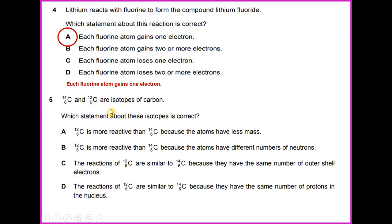These two carbons are isotopes of carbon. Which statement about this isotope is correct? The reactions of C-12 are similar to C-14 because they have the same number of outer shell electrons. If you can see, both carbons have the same number of electrons.